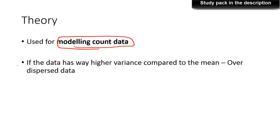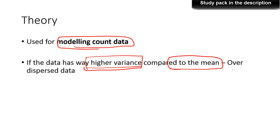We use negative binomial regression to model count data only when the variance of the data is high compared to the mean. This is the condition that differentiates Poisson regression from negative binomial regression, and we call that situation or that type of data 'over-dispersed data.' Over-dispersion is the main difference that sets negative binomial regression apart from Poisson regression, and remember it is used mostly to model count data.